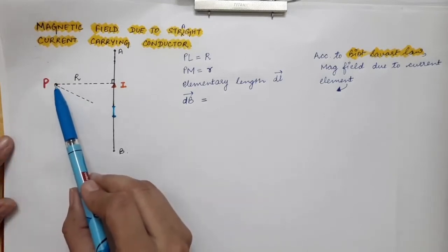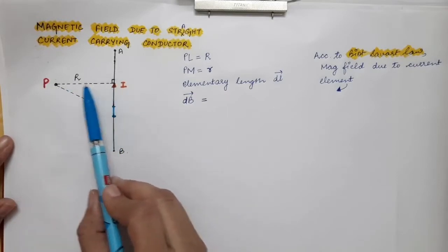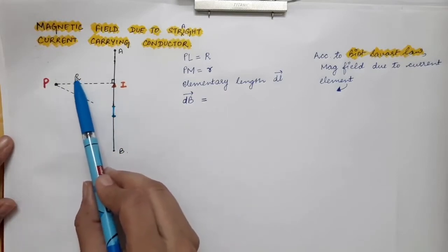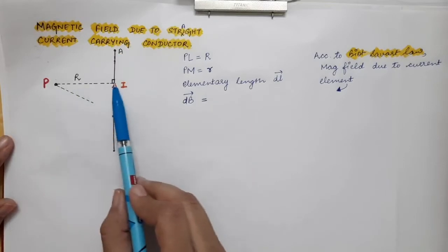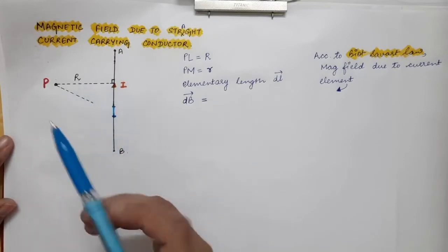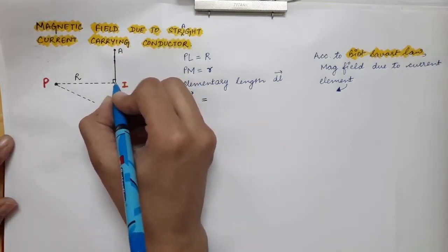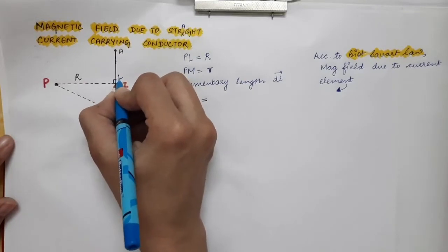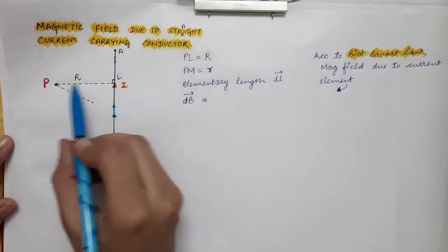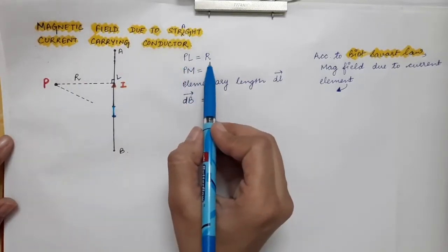This point P is at a perpendicular distance of capital R from this wire. So this distance is equal to capital R. Let's denote this point as L, so PL is equal to capital R.